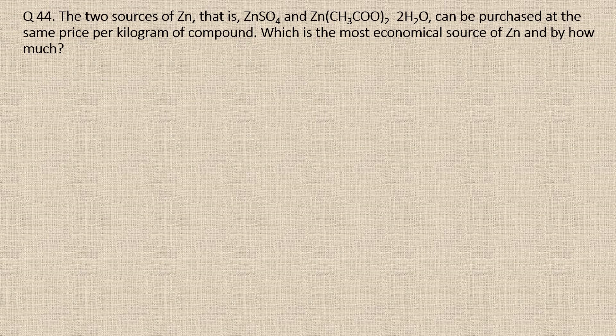Question 44. The two sources of zinc, i.e. zinc sulfate and zinc acetate dihydrate, can be purchased at the same price per kilogram of compound. Which is the most economical source of zinc and by how much?